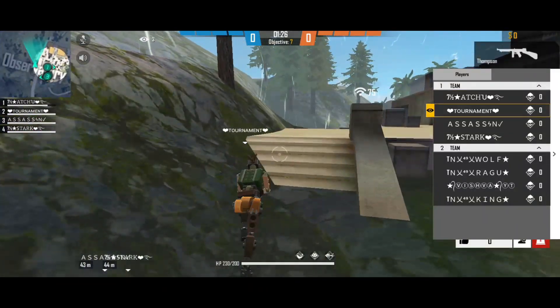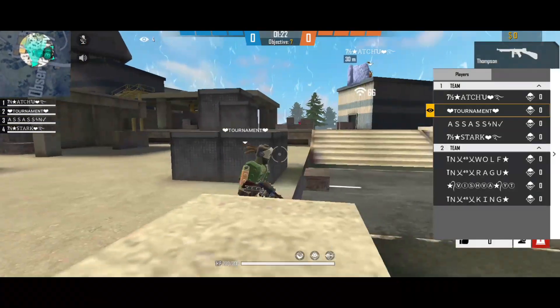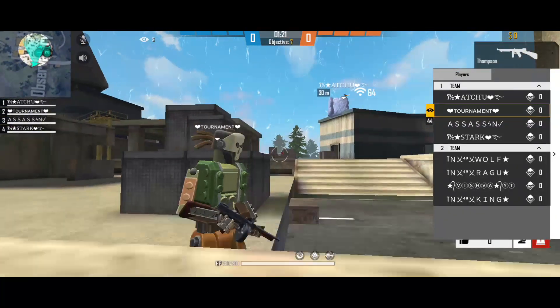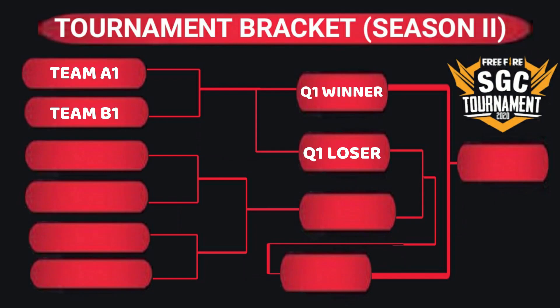The 24 teams will be split into two groups: Group A and Group B. Team A1 and Team B1 will play one match each, and the winners go directly to the finals. The losers will have a second chance through the eliminator rounds.